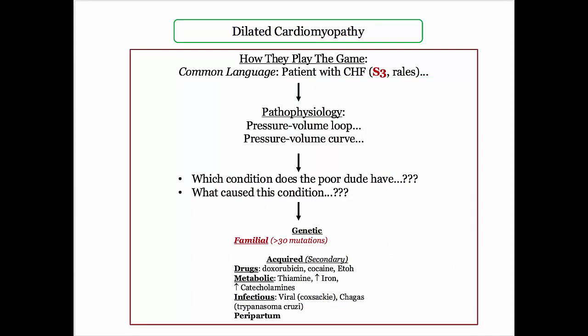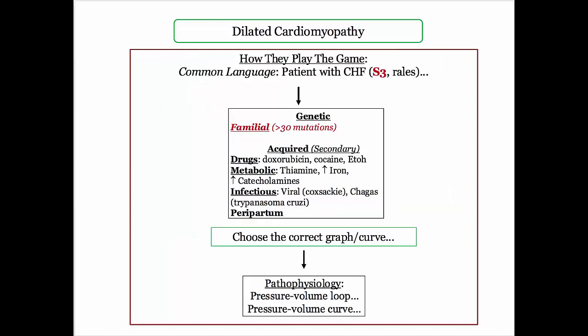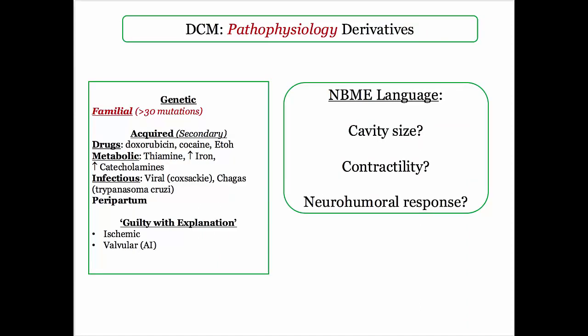This is how they play the dilated cardiomyopathy game. The vignettes describe a symptomatic patient, generally using the language of S3 and rales — remember, S3 describes a chamber at its elastic limit. The question stem then takes you to the pressure volume loops or curves. From there, they expect you to make the specific diagnosis, such as doxorubicin toxicity, or identify the etiologic agent, such as the parasite in Chagas disease or the vector — the Reduviid bug. Alternatively, they can describe a patient with CHF and recent viral infection and ask you to identify the correct pressure volume graphics and hemodynamic parameters.